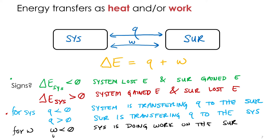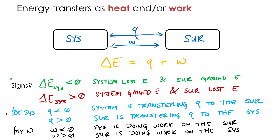If it's the opposite — the system is gaining energy, positive work — that means the surroundings are doing work on the system. One way the surroundings can do work on the system is when you compress gases. That gas can later be released to do work, so it's gaining energy when compressed. Similarly, when you push down on a spring, you're doing work on the spring — it gains potential energy so that the spring can later do work.